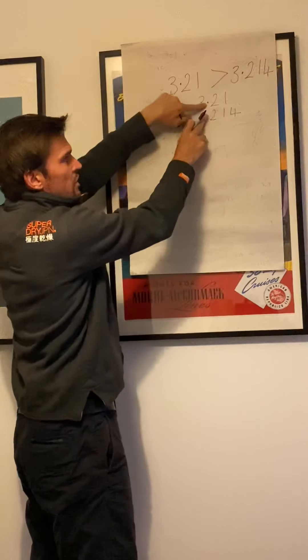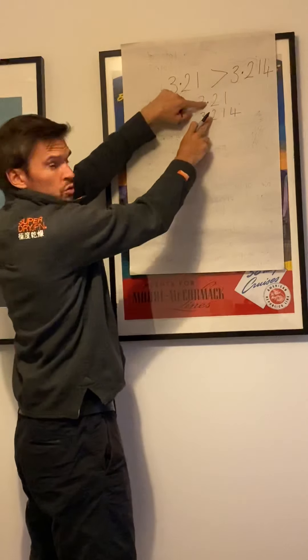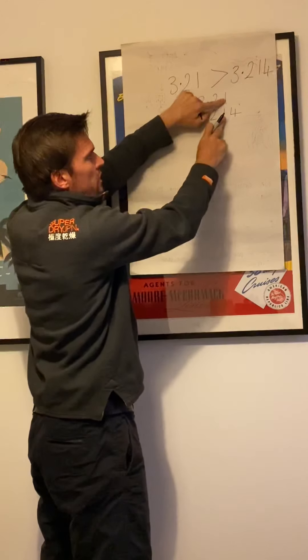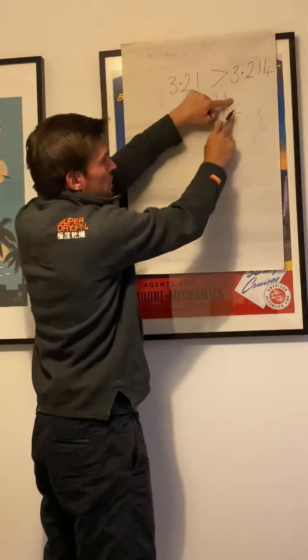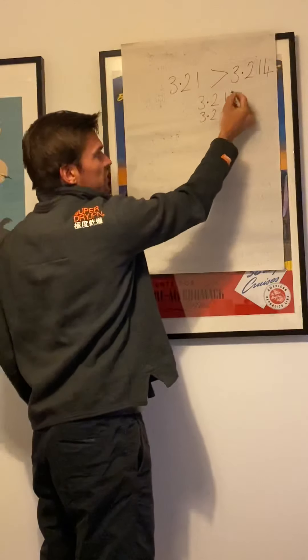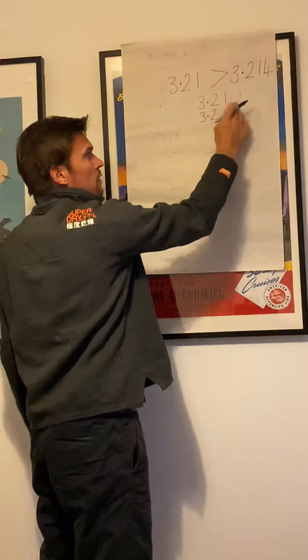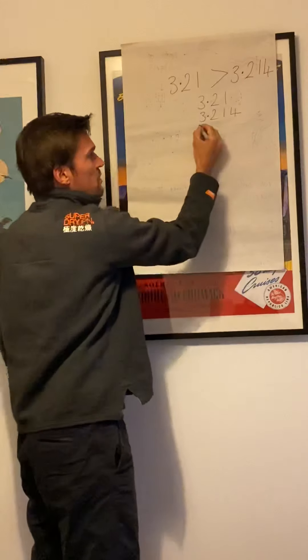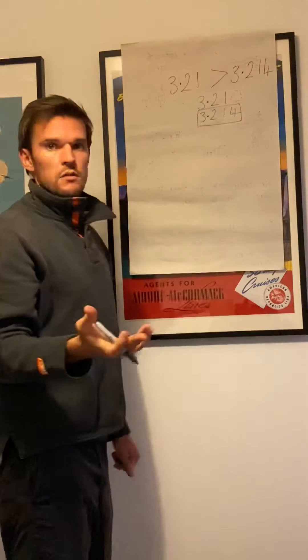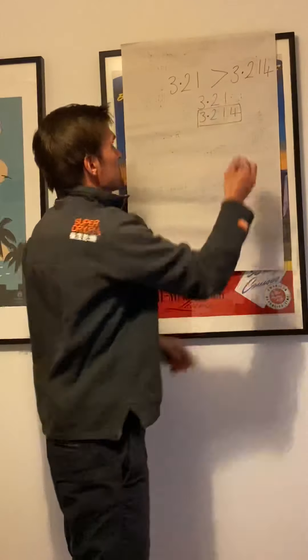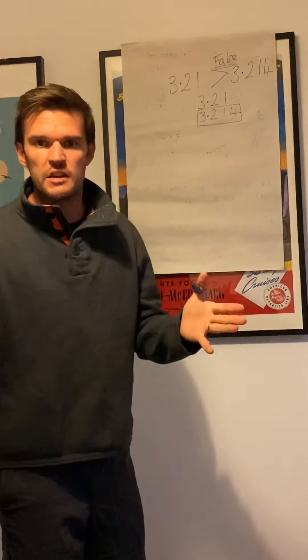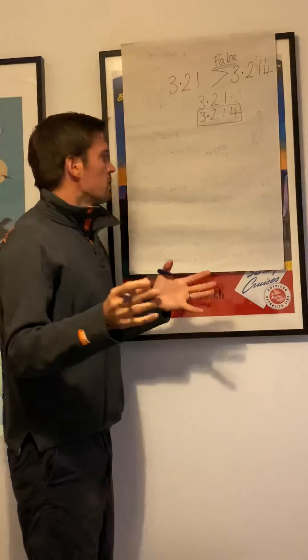Three in the units. If you notice, I've lined up the decimal places, very important. Three units the same, two in the tenths the same, one in the hundredths the same. And here we've got nothing, which would be a zero in the thousandths, and four in the thousandths. So this number is bigger, which makes this false.